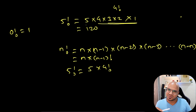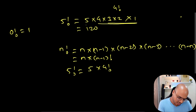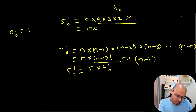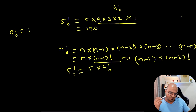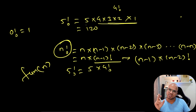This is actually recursion — you're finding n factorial, and for that you have to find (n−1) factorial, and for that it's (n−1) × (n−2) factorial, and so on. If you define this as a function of n, you just have to call the same function again and again — that's it.